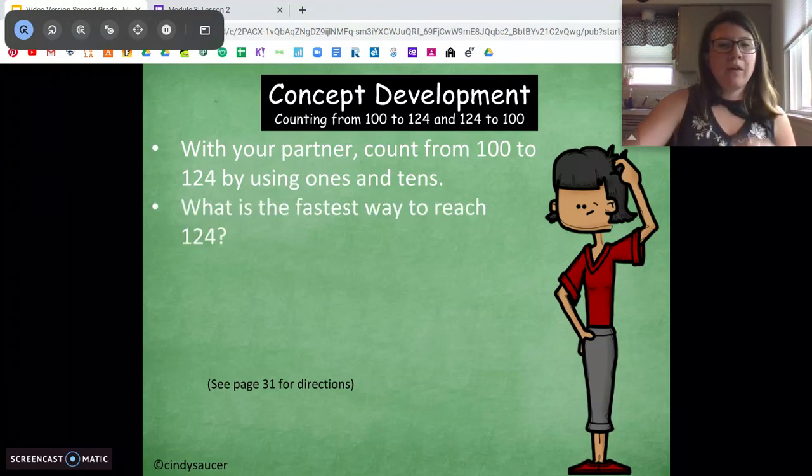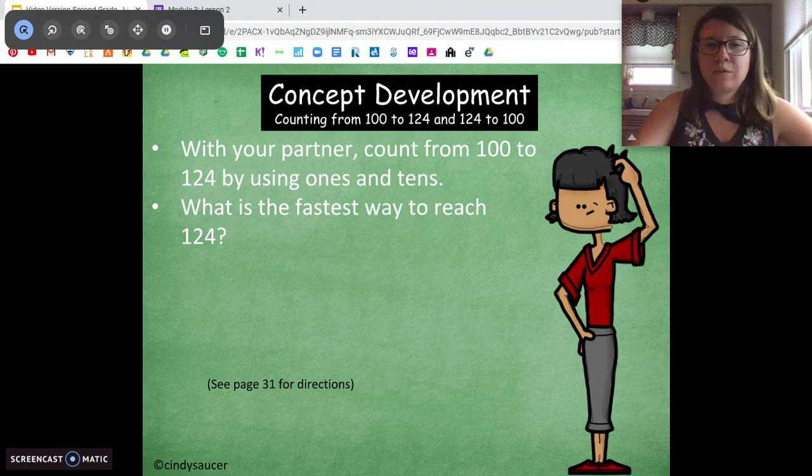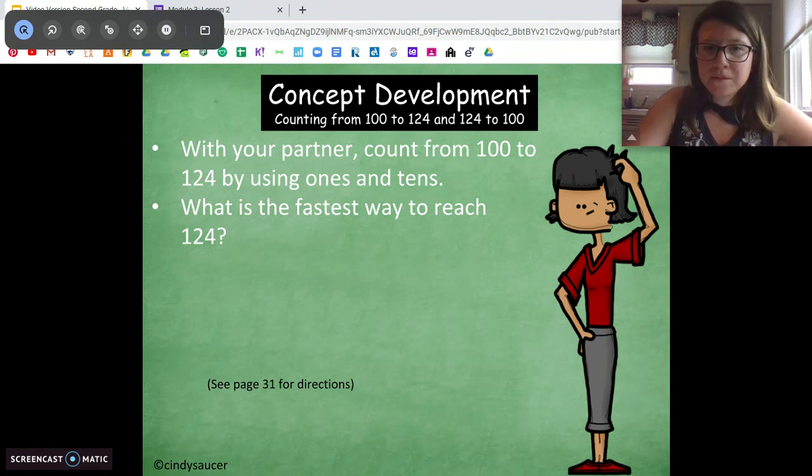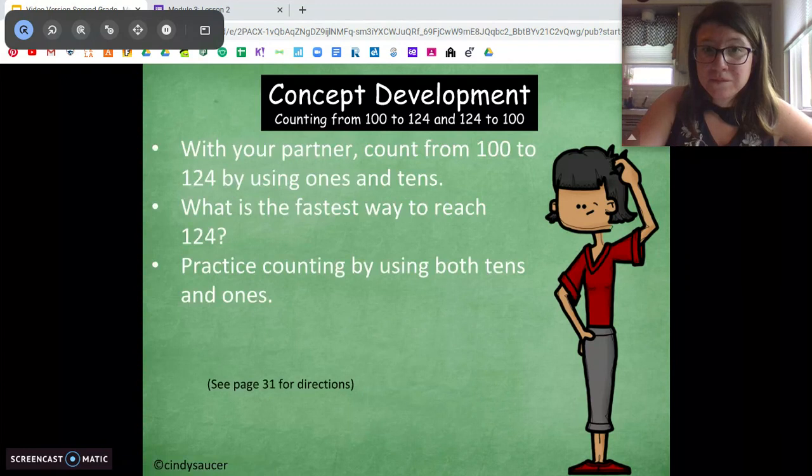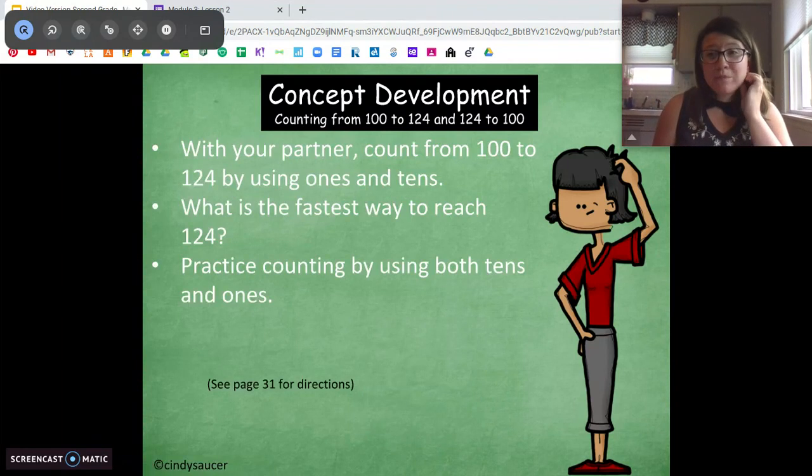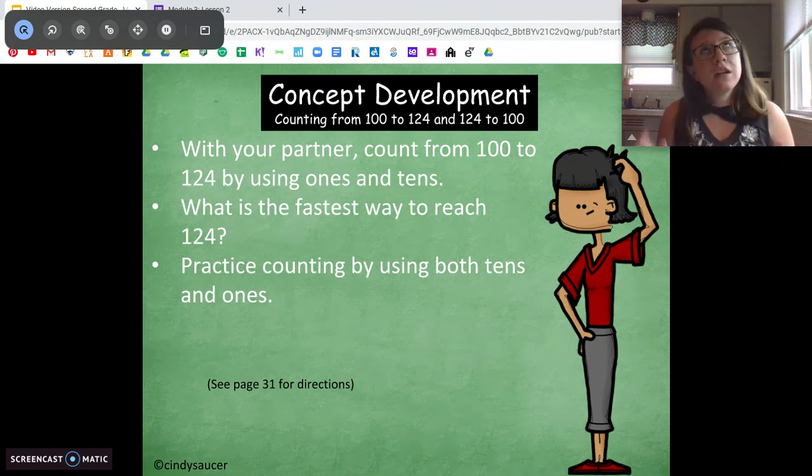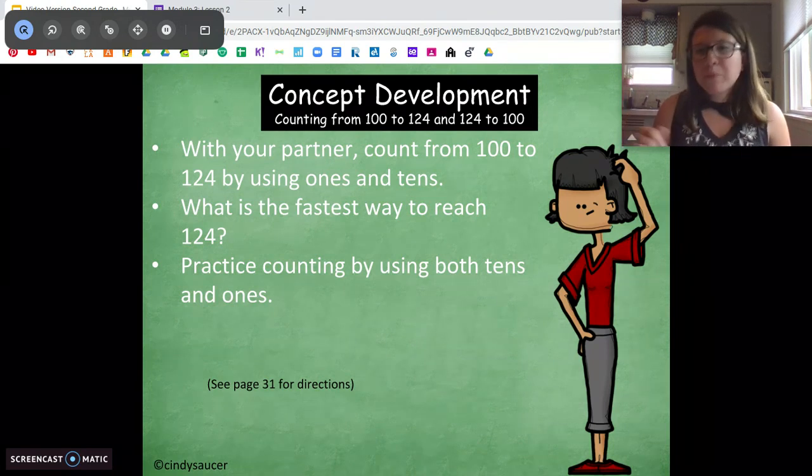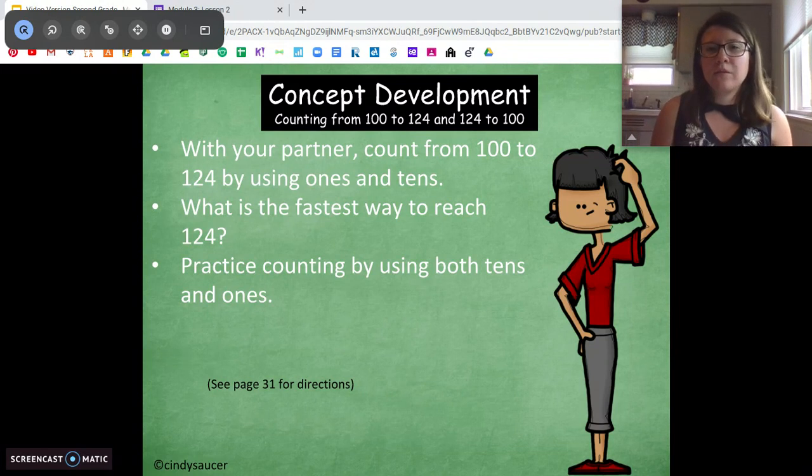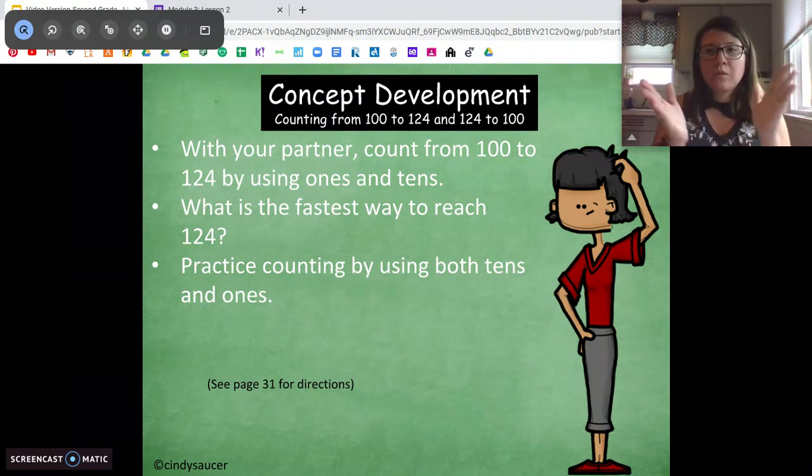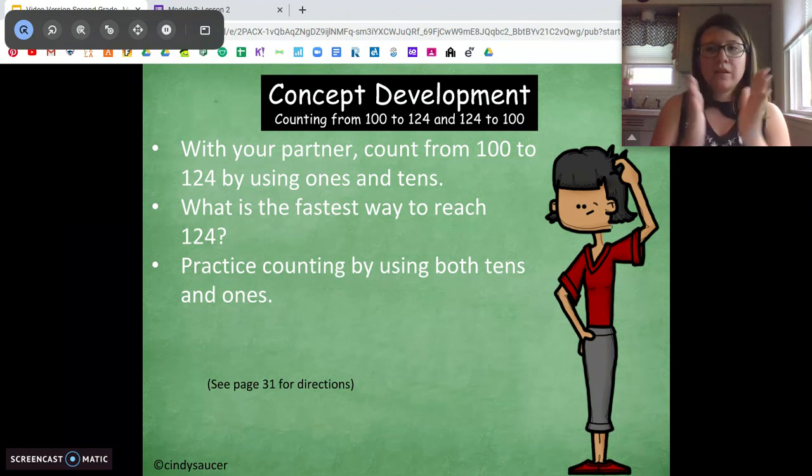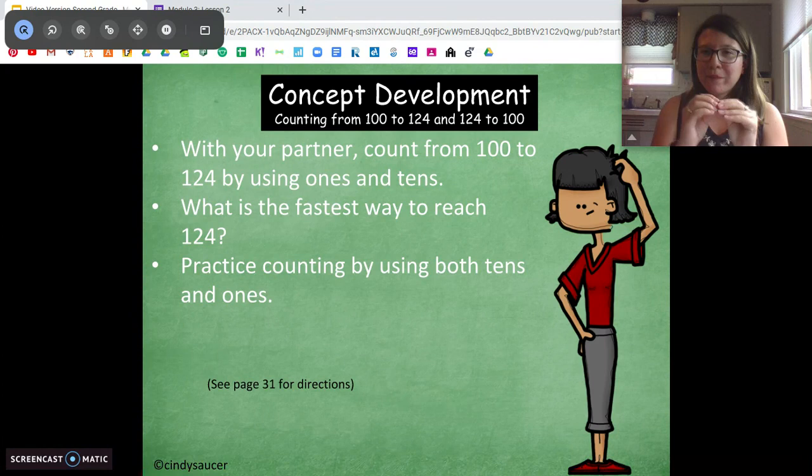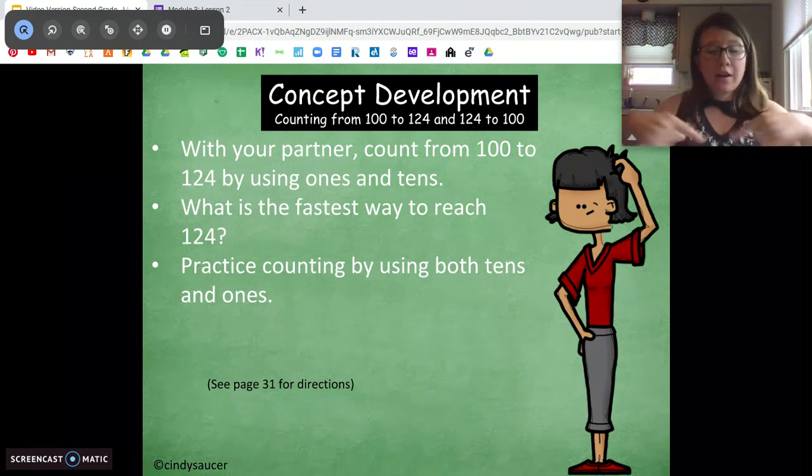Ready? Okay. What was the fastest way to reach 124? When we use, good, when we use both tens and ones, it goes a lot faster. If we just use ones and we're like 100, 101, 102, 103, 104, it's going to take a while. But what if we start by counting by tens and we go 100, 110, 120, 121, 122, 123, 124. When we mix the tens and ones, it goes a lot faster.